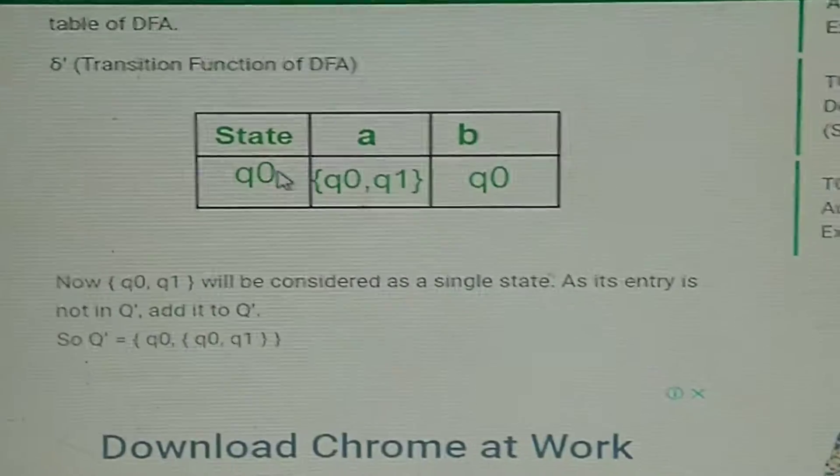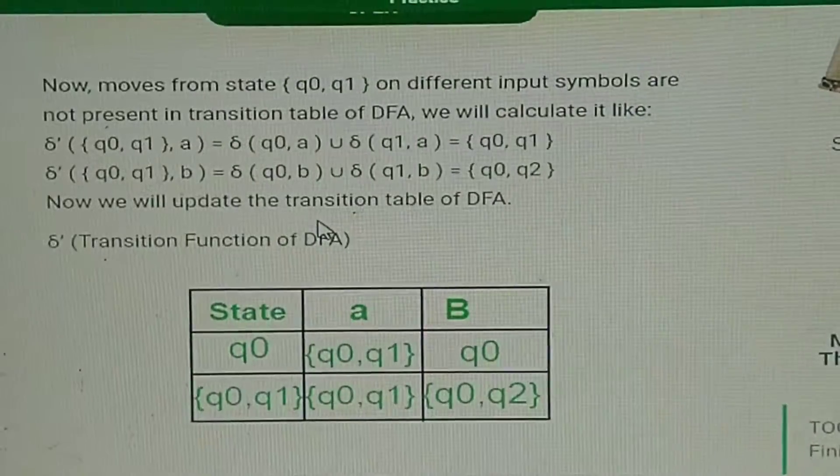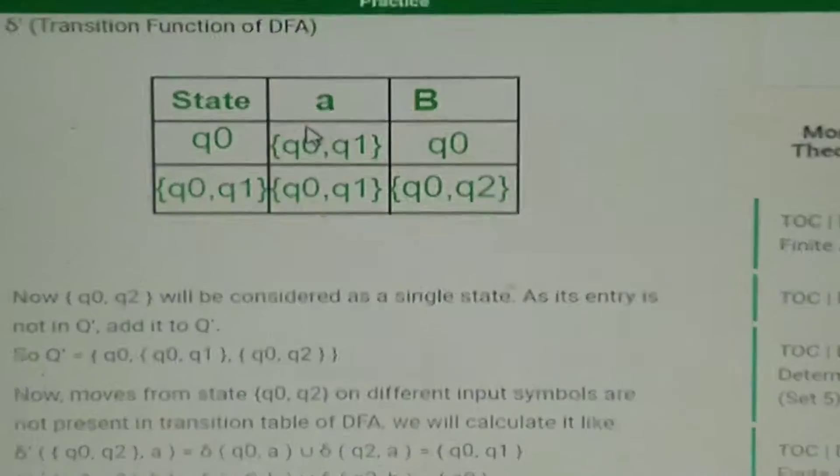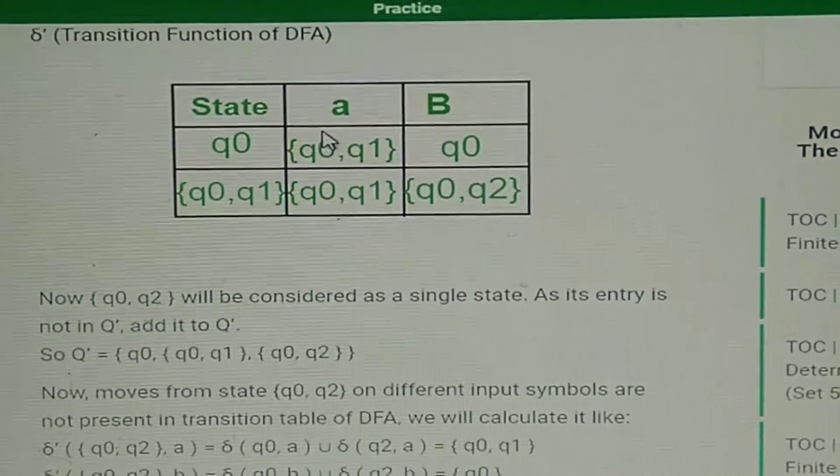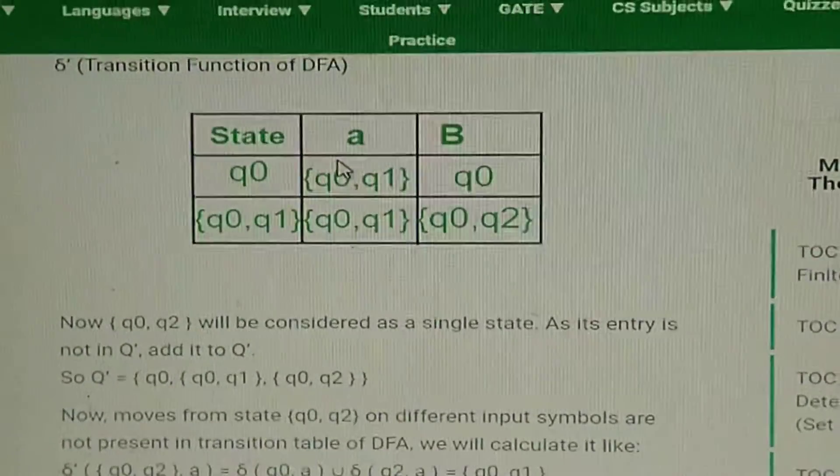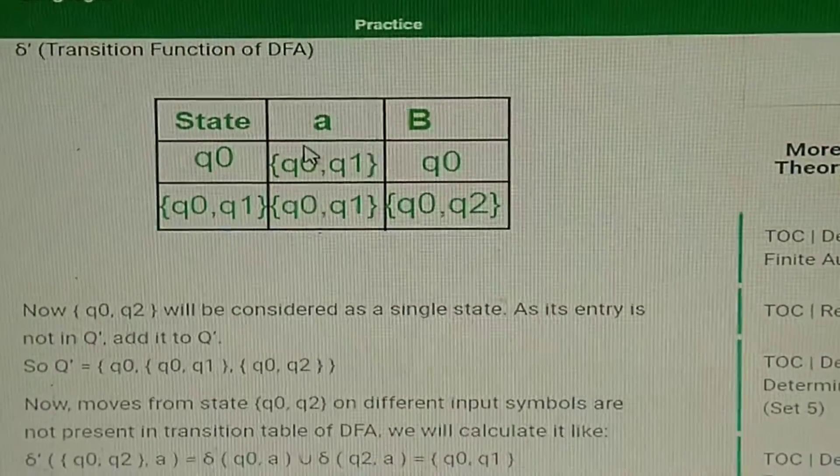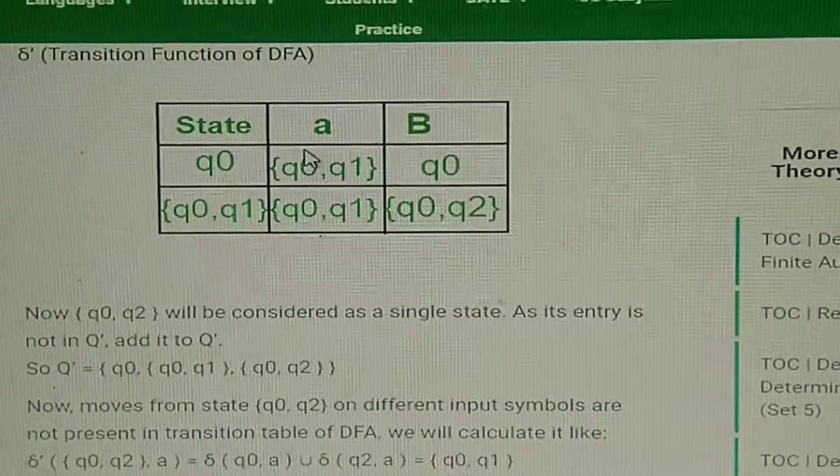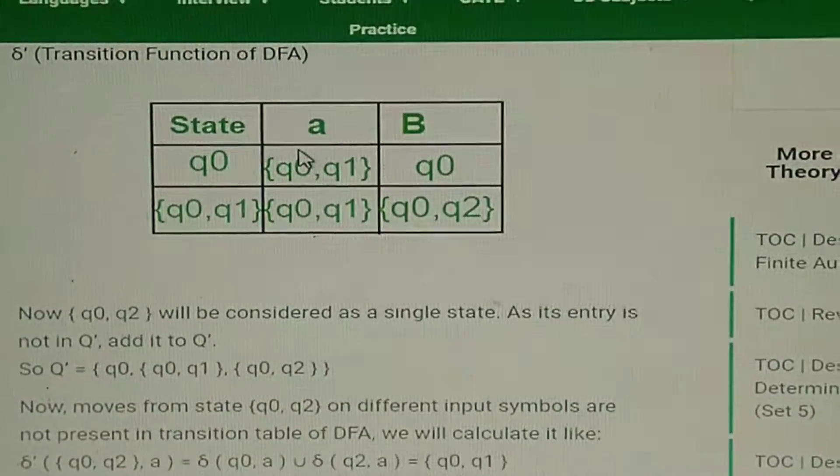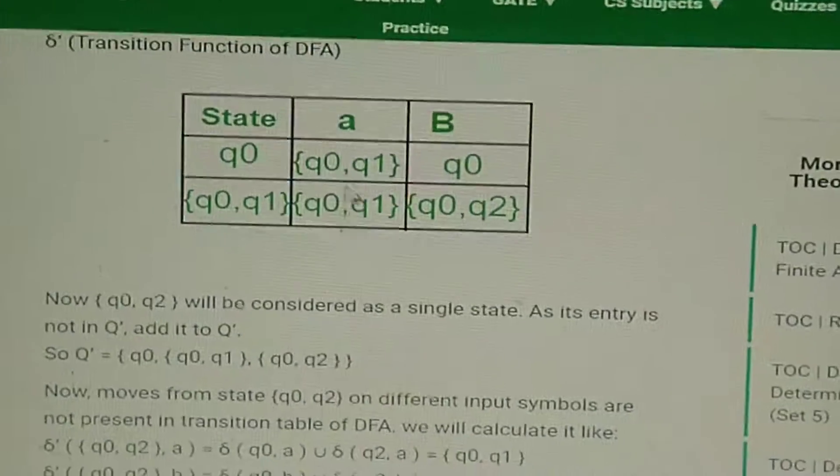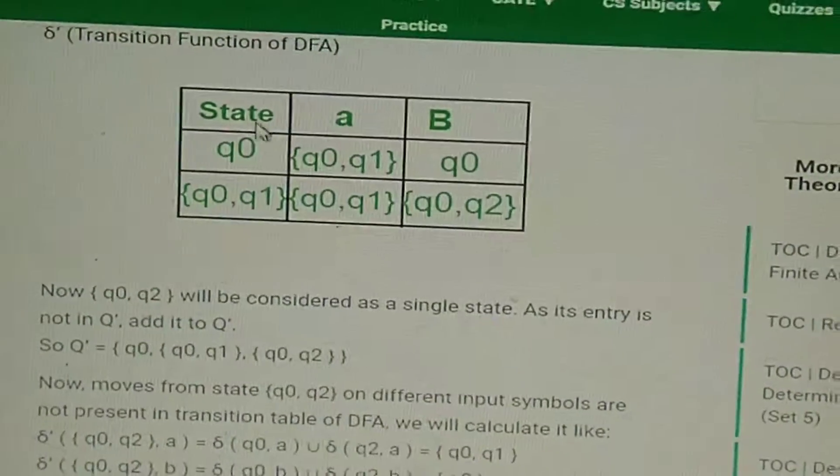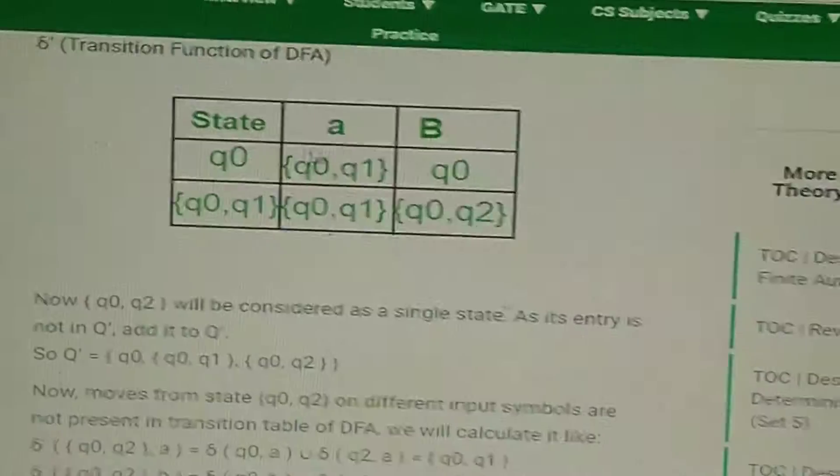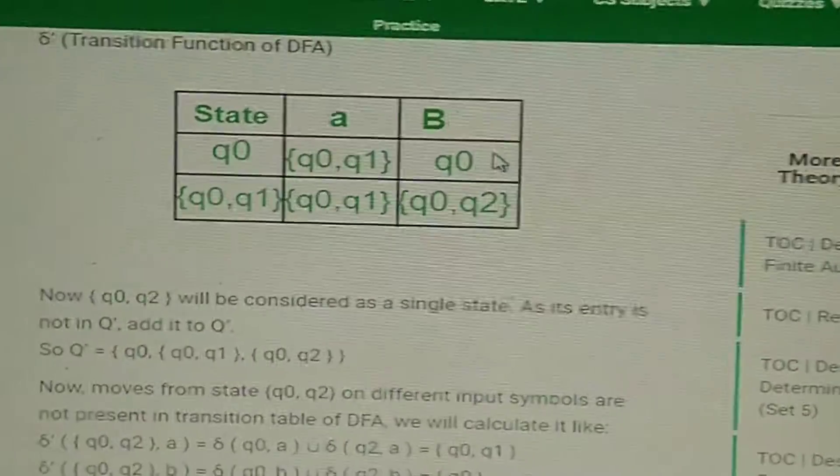Now the second step - whenever we encounter any new type of state, we will just put it in the state column of the table and we'll try to define it further. So here, if you can see, you have given 'a' to q0 and then you get q0 and q1, and here q0.